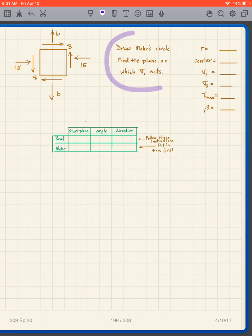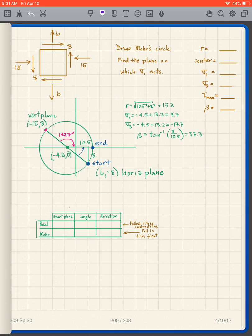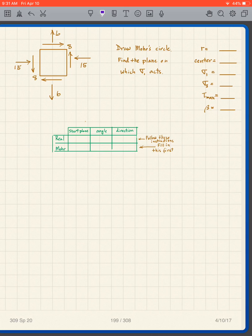Okay, you do this problem. Same thing: draw the Mohr circle, find the plane on which sigma 1 acts. To do that, pause the video, solve this problem.